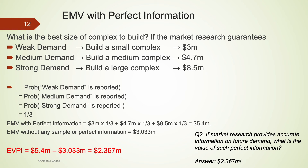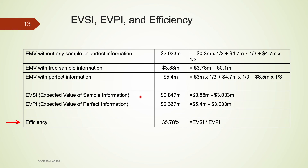This implies that the value of perfect information is $2.367 million. Here is a summary of all the values we have calculated, including EVSI and EVPI. Efficiency can also be calculated as their ratio, and that's 35.78%. This number tells us how good the sample information is when compared to perfect information. An efficiency of 100% would indicate that the information from market research is as good as perfect information. Please pause the video here and review how each number is obtained.